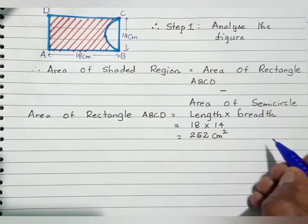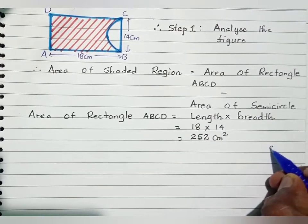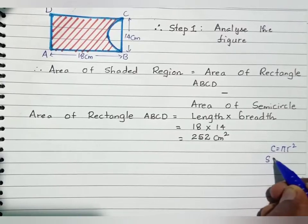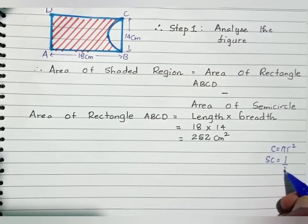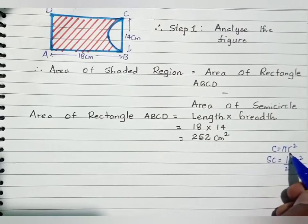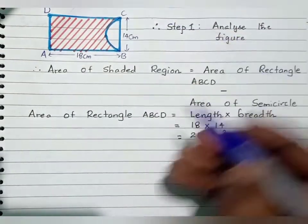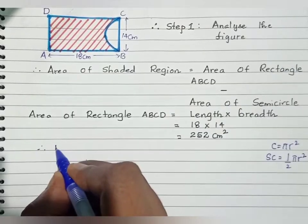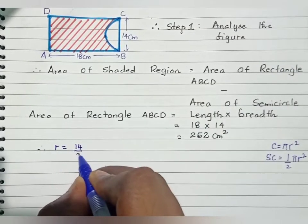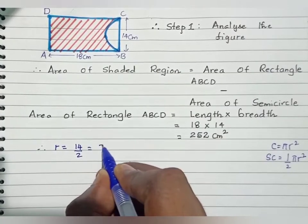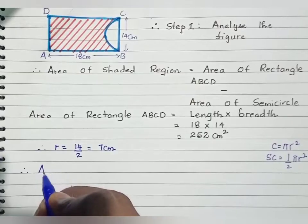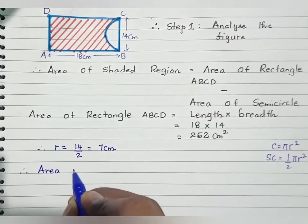Now we find out the area of the semicircular part. Area of circle equals pi r square, therefore area of semicircle is half into pi r square. We need to find the radius. BC is taken as diameter, so radius equals BC divided by 2, that is 14 by 2, which gives 7 centimeter.